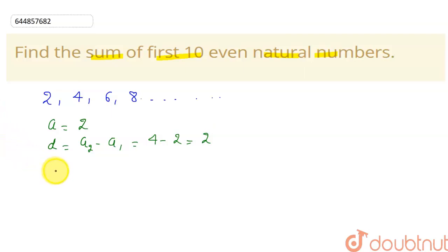Now we can use our Sₙ formula. What is the Sₙ formula of an AP? n/2 into [2a + (n-1)d]. Here the value of n will be 10, as we have to find the first 10 even natural numbers.